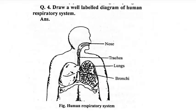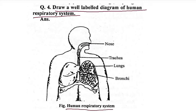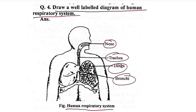You can see this in the diagram. Draw a well-labelled diagram of the human respiratory system. You can see the human respiratory system here. Draw it in your copy. It shows the nose, trachea, lungs, and the diaphragm.